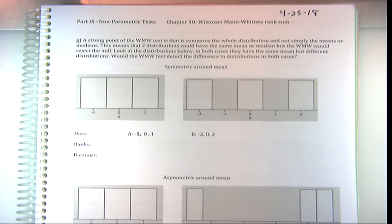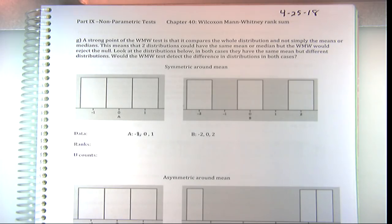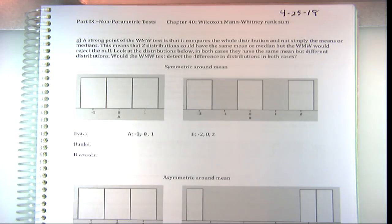We're going to continue today with these nonparametric tests. The idea is that all these nonparametric tests are testing the ranks rather than the actual values. They're translating all the numbers into rankings, into integers between 1 and n, where n is however many numbers you have total. Because when we do that, we basically have a uniform distribution — just numbers 1, 2, 3, 4, 5, 6, up to however many numbers you have. That's a completely uniform distribution.